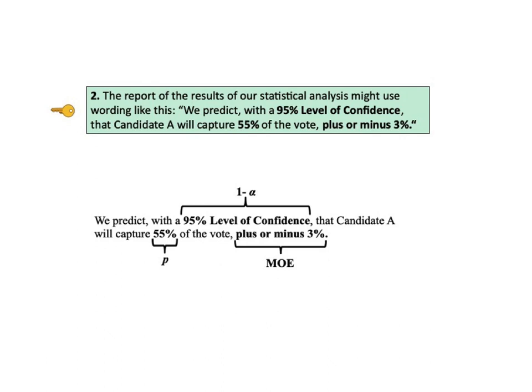Key to understanding number 2 says the report of a statistical analysis might use a statement like: We predict with a 95% level of confidence that candidate A will capture 55% of the vote, plus or minus 3%. A 95% confidence level means alpha was chosen to be 0.05, or 5%. The 55% is the proportion p, and the plus or minus 3% tells us the margin of error. We specify the values of alpha and margin of error prior to collecting the sample data, as both are involved in calculating how large our sample needs to be.